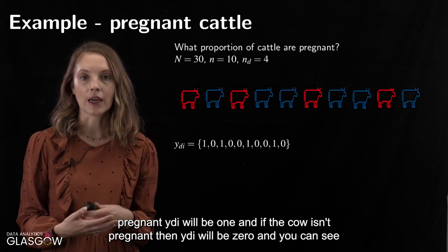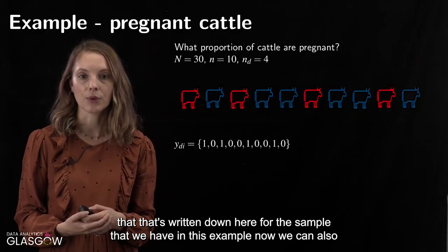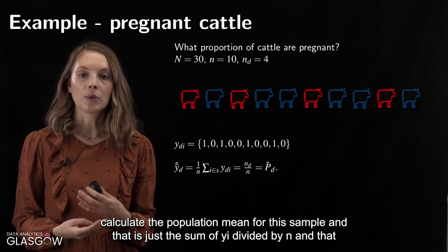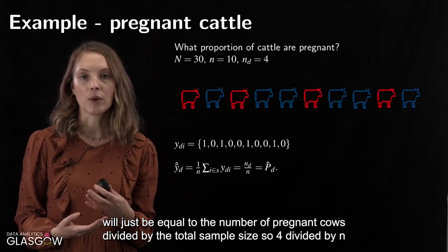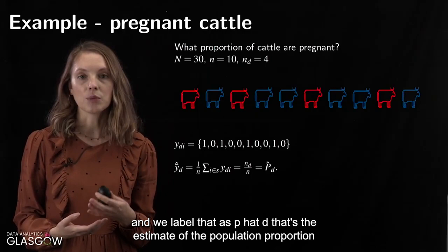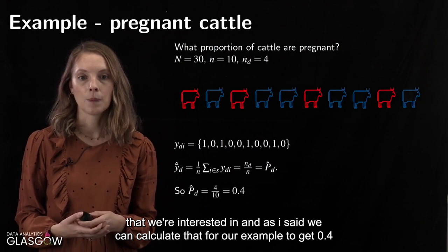That is written down for the sample we have in this example. We can calculate the population proportion — or population mean — for this sample, which is just the sum of YI divided by N. That equals the number of pregnant cows divided by the total sample size, so four divided by N. We label that P̂D, the estimate of the population proportion, and for our example that gives us 0.4.